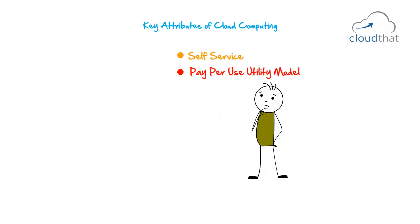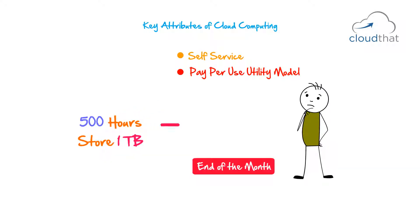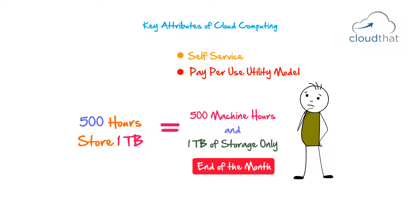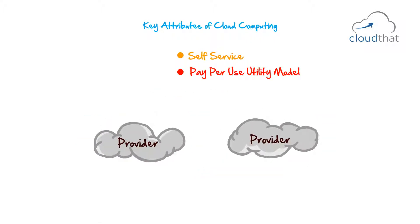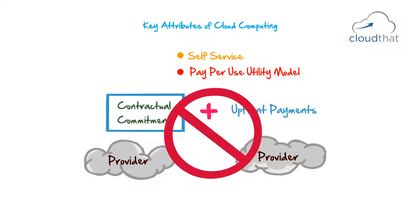In this model, you consume cloud resources. For example, if you use a machine for 500 hours and store 1TB of data, then at the end of the month you are billed for those 500 machine hours and that 1TB of storage only. Any provider which needs a contractual commitment and upfront payments cannot be considered a cloud provider.